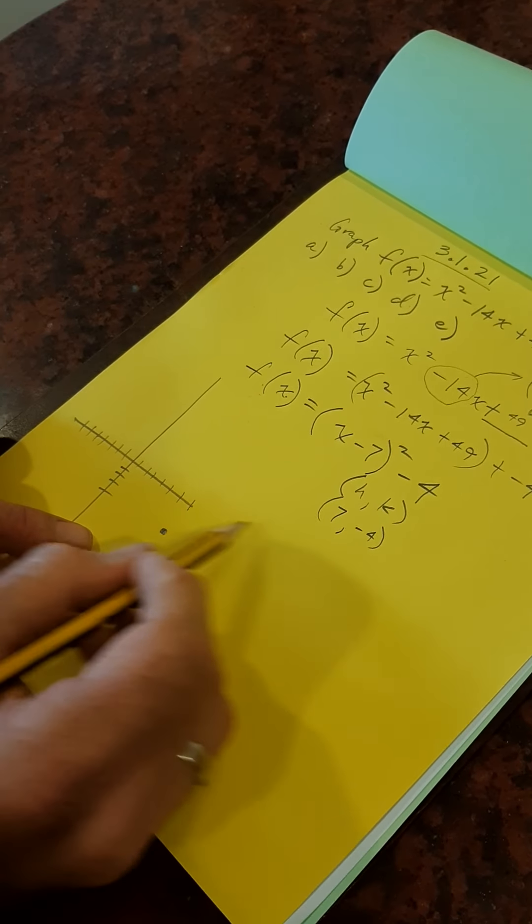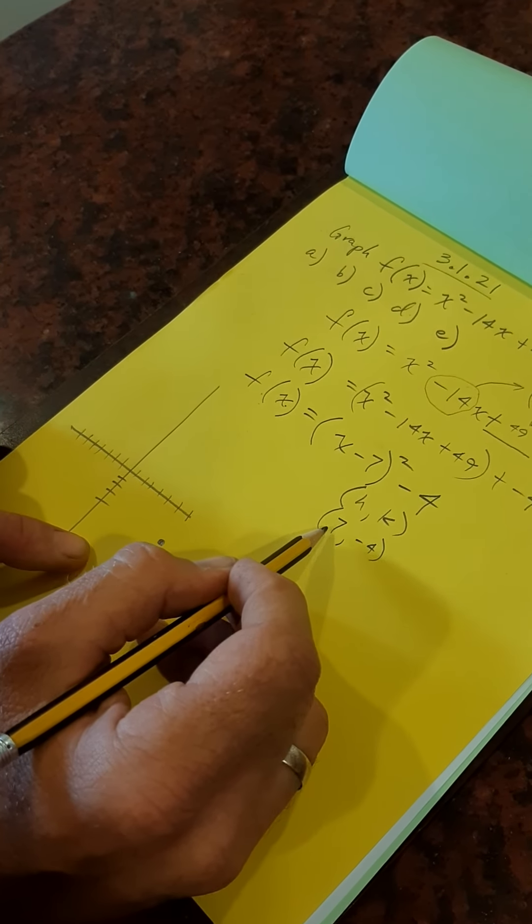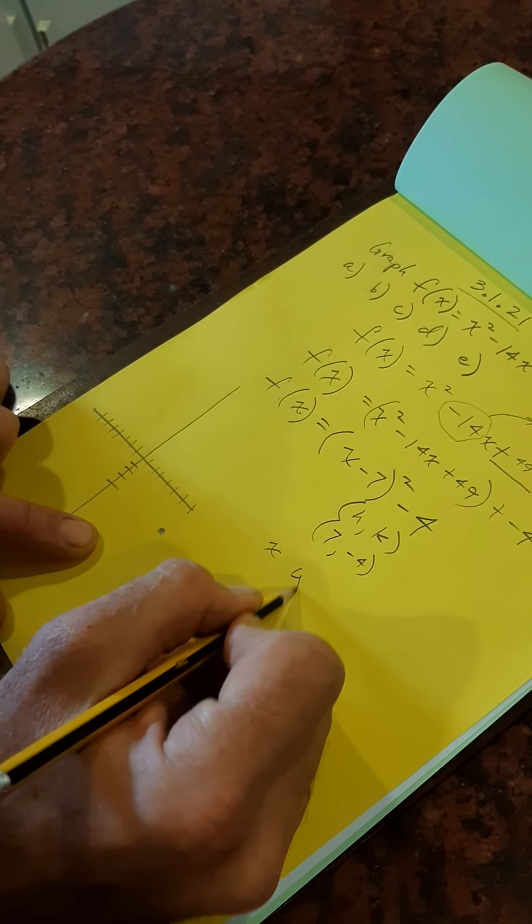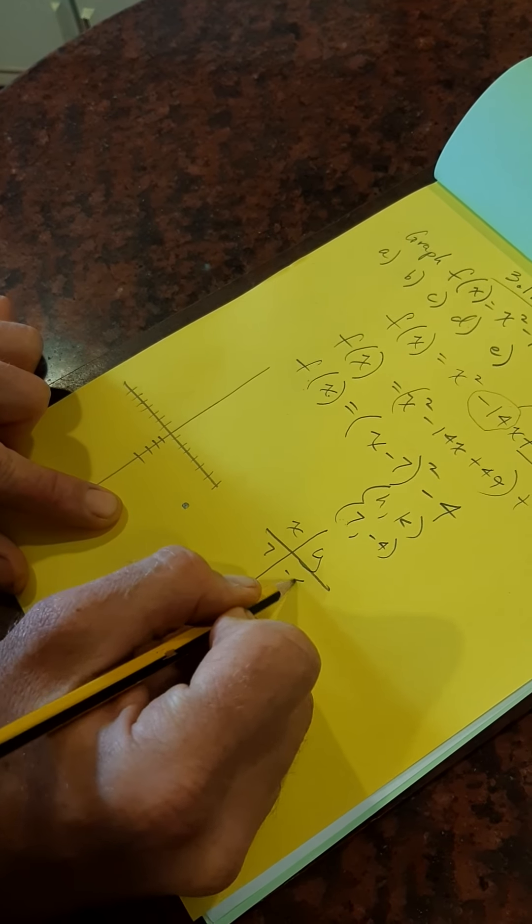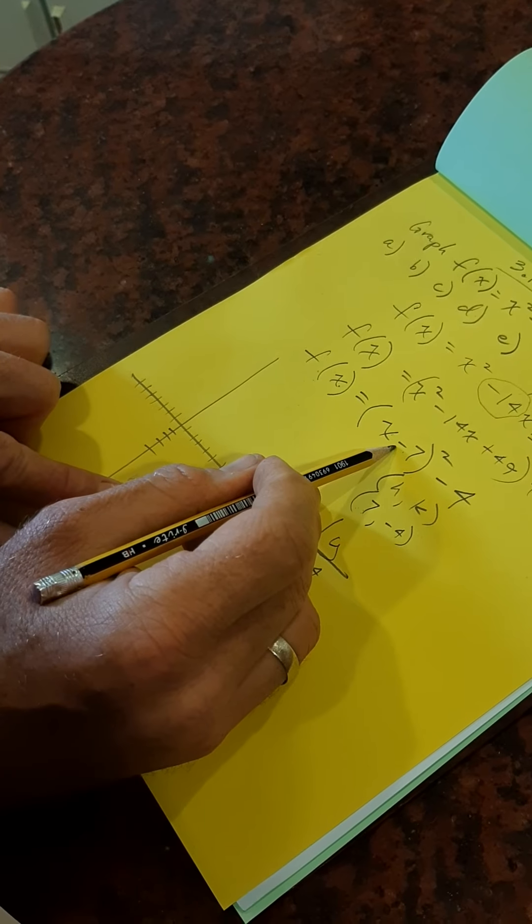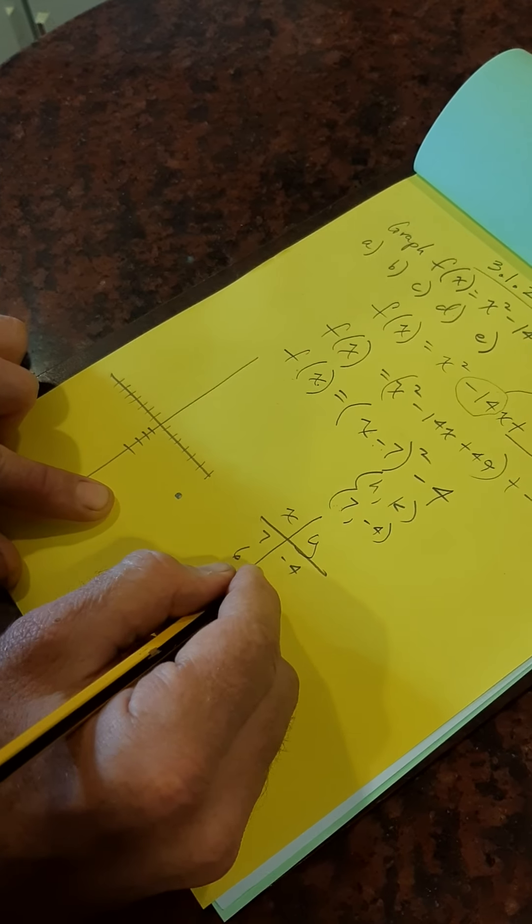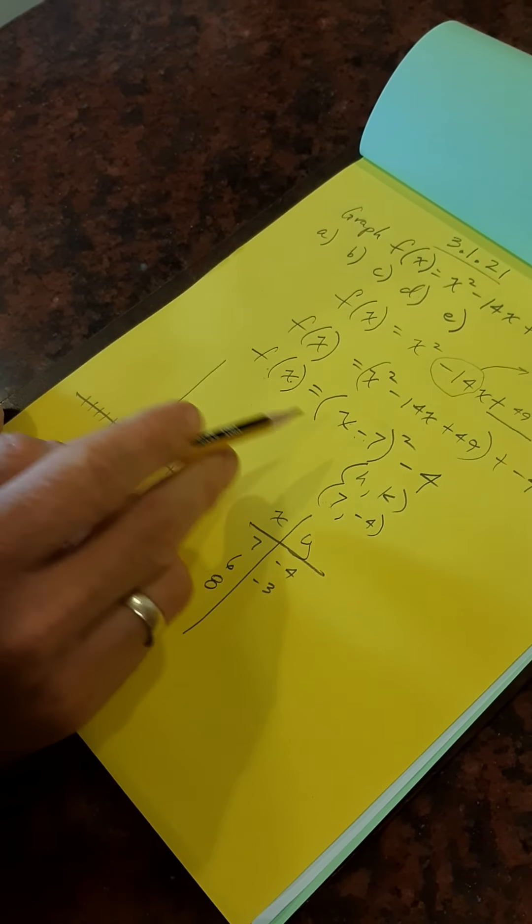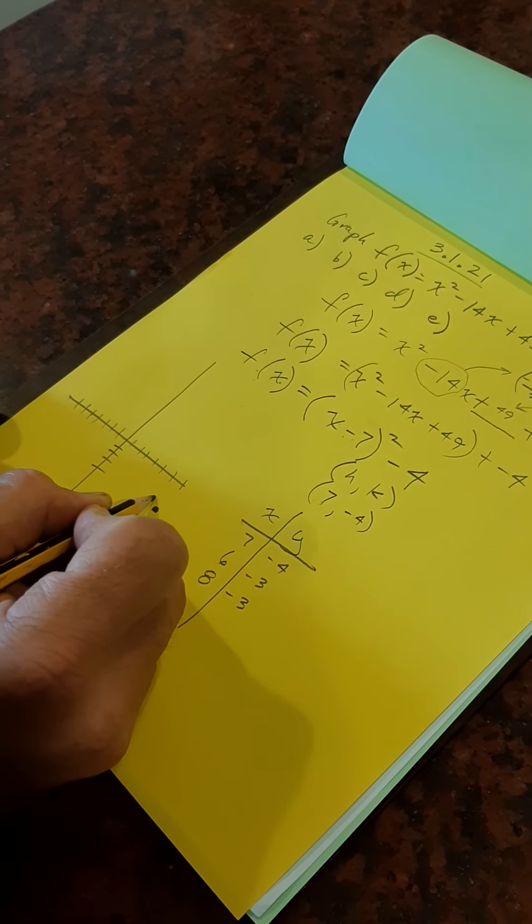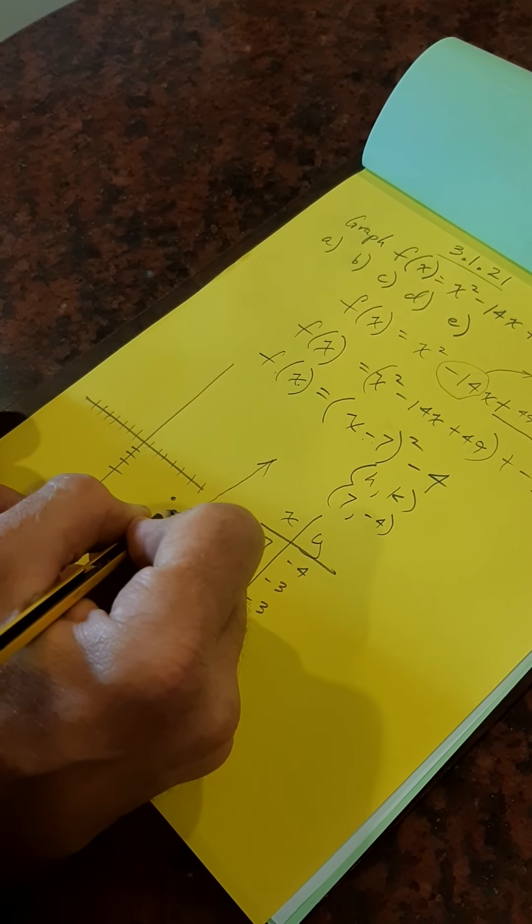The next easiest point is 6 and 8, one either side of the 7. So I've got x, y. I've got 7 comma minus 4. Now I'm going to have 6. I'm going to put my 6 in here. 6 minus 7, minus 1 squared is 1 minus 4, 1 minus 4 is minus 3. 8, same thing. 8 minus 7, 1. 1 squared, 1, minus 3. And so there you've got your points here and here, and you have your little equation graphing up. So we've got the graph.